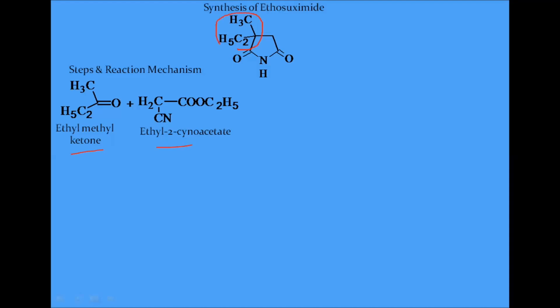This portion of ethosuximide will come from ethyl methyl ketone. Ethyl methyl ketone is reacted with ethyl-2-cyanoacetate. This is the ethyl and this is the one position and this is the two position, so 2-cyanoacetate. Ethyl methyl ketone is reacted with ethyl-2-cyanoacetate in the presence of piperidine. And this reaction is known as Knoevenagel condensation.